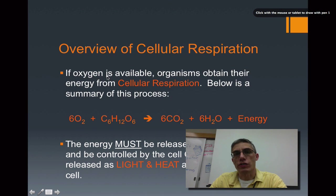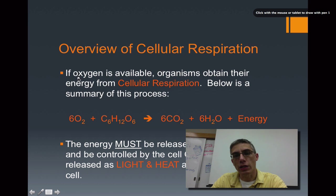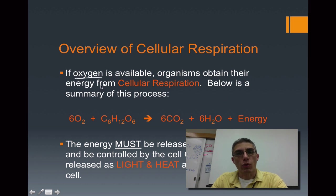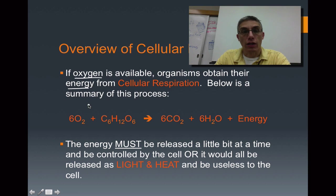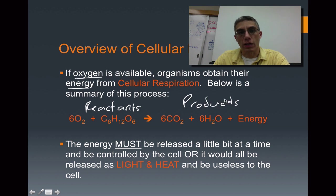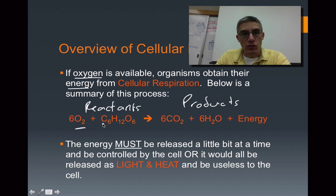Before we get too deep into the details, let's give a quick overview of cell respiration. If an organism is going to carry out a complete process of cell respiration — meaning it goes through all three parts — then oxygen must be available. Below is a summary equation, very similar to the one we looked at for photosynthesis in Chapter 8. We have reactants on the left and products on the right. The reactants are O2 and C6H12O6, which represents the food molecule, specifically glucose.